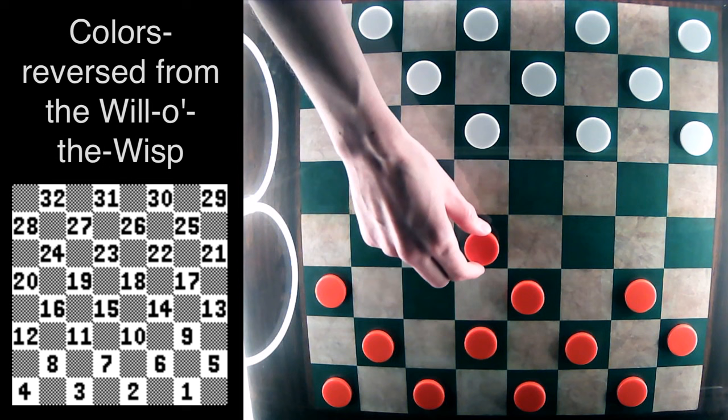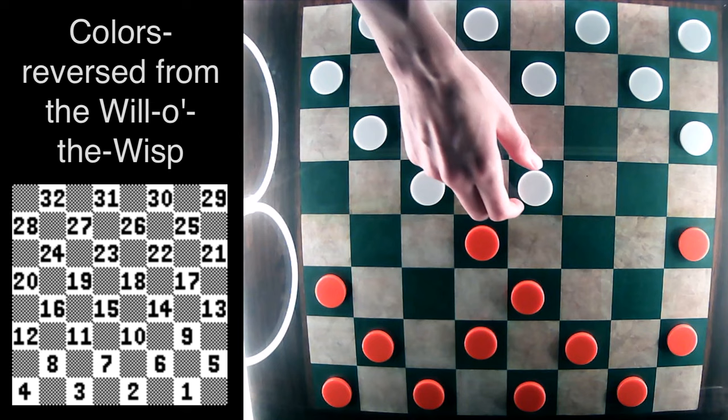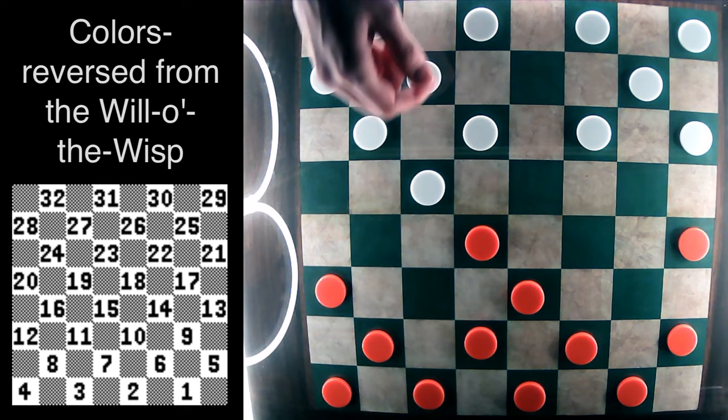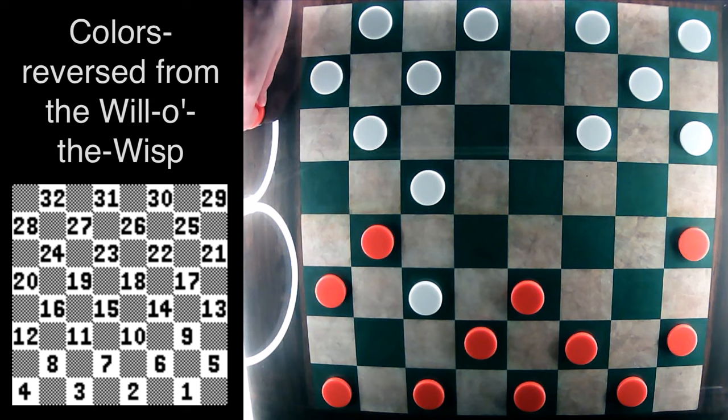Let's play to this position but with colors reversed as I mentioned earlier. So we have the will-o'-the-wisp opening with 11-15, 23-19, and 9-13. And instead of maybe the more common 22-18 reply, you have this 26-23, which is a good secondary attack in the will-o'-the-wisp. After 8-11, we have 23-18, kind of a cross formation via the 11-16 exchanges.